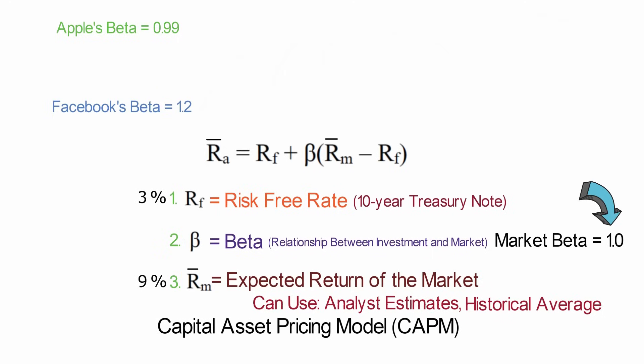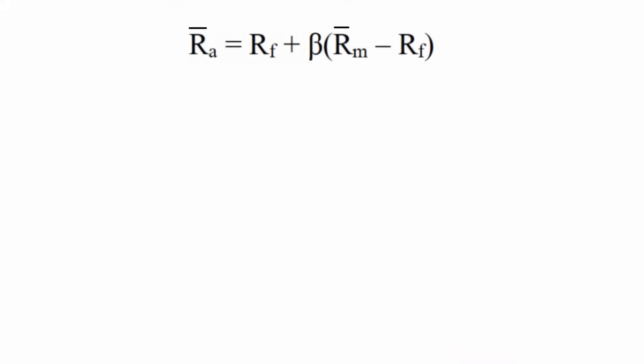Okay, so now we have all of our inputs. Our risk-free rate is 3%. Beta for Apple is 0.99. And for Facebook, it's 1.2. And then we have the expected market return of 9%. Okay, so let's plug these numbers in.